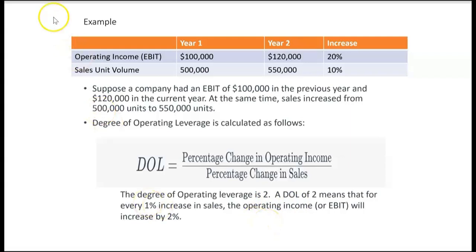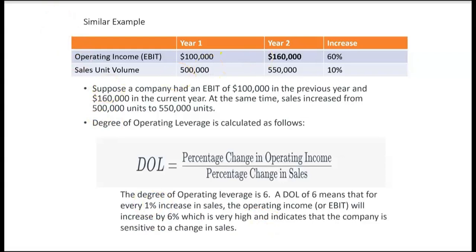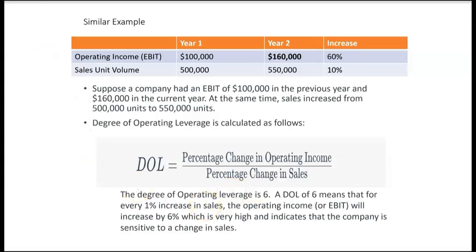Let's look at a similar example, changing only one number. A company with EBIT of $100,000 in year one, but now the current year EBIT is $160,000 — a 60% increase — while sales unit volume is the same: 500,000 to 550,000 units, a 10% increase. The DOL is 60% divided by 10% equals 6. A DOL of 6 means for every 1% increase in sales, operating income increases by 6% — considered very high operating leverage, indicating the company is very sensitive to changes in sales.